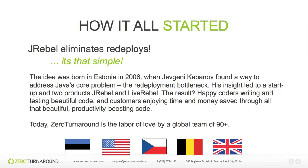How did JRebel come about? Back in 2006, Yevgeny Kavanov and Thomas Romer, after many years of application redeploy and container restart pain, decided enough was enough. It's time to fix one of the biggest problems in the core of Java: the redeploy bottleneck. So they created JRebel to plug this hole, and since then we've seen happy developers enjoying coding in Java with increased productivity.